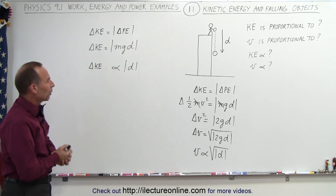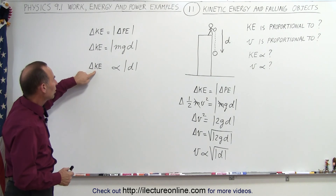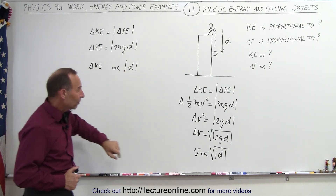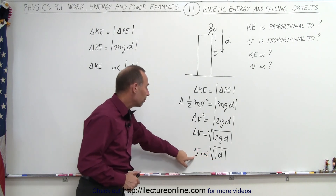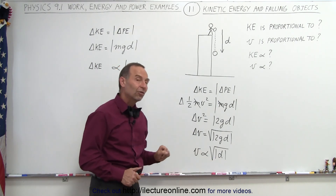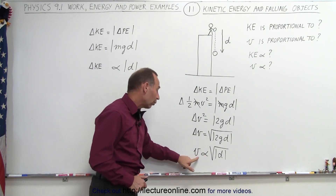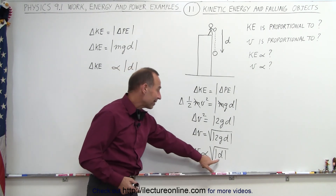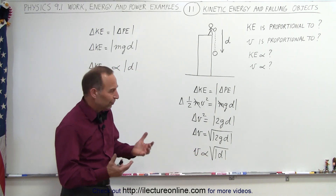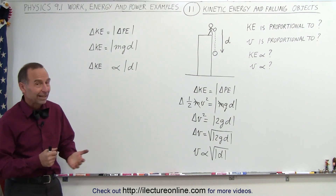Let's summarize what we just found. There is a linear relationship between the change in kinetic energy and the distance the object has fallen, and a non-linear relationship between the velocity gained and the distance fallen. For example, four times the distance fallen only means it's going twice as fast; nine times the distance fallen, and it's going three times as fast. That's how it's done.